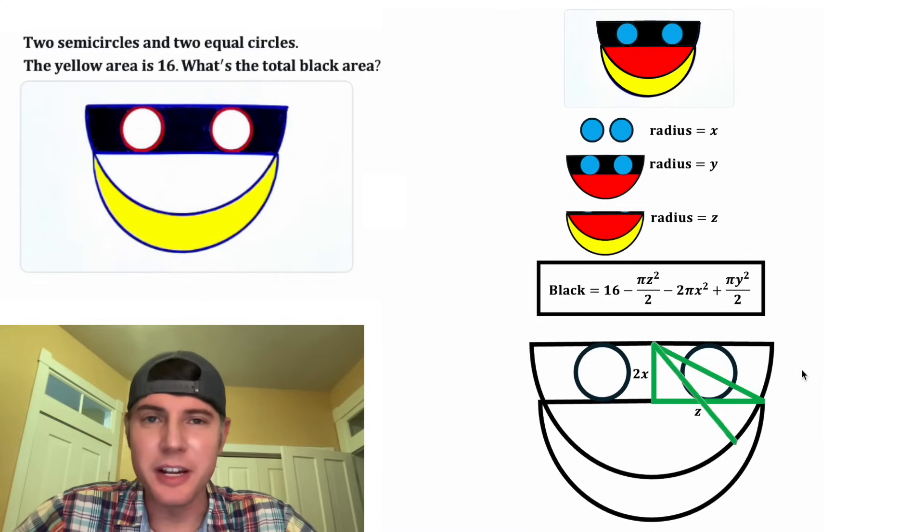And this hypotenuse is the same length as the radius of this other semi-circle. So it's gonna have a length of Y. Does that make sense, Y? Now let's focus on this right triangle.